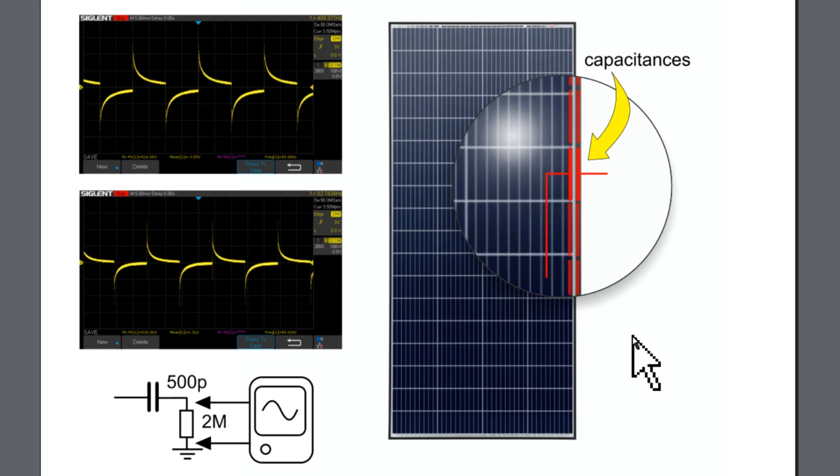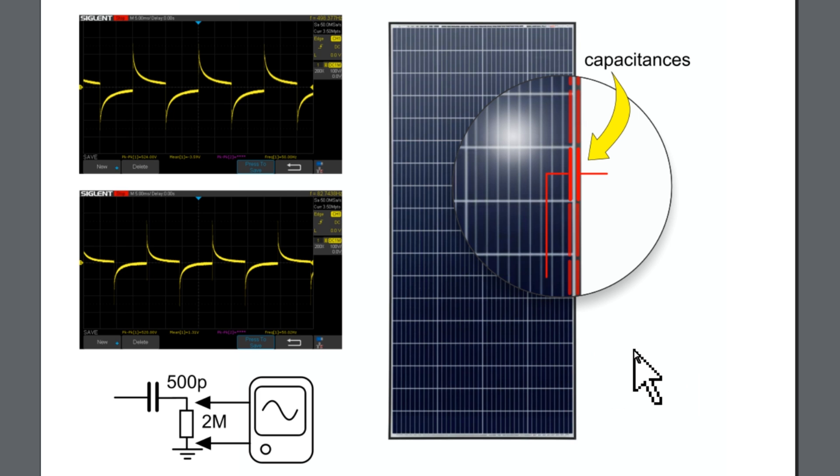So this could cause some problems when you are going to ground the frame of the panels because you will get a current that will flow through this capacitance.